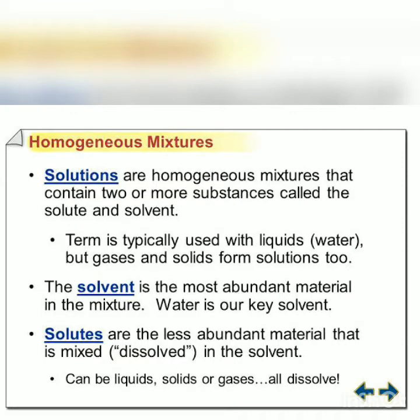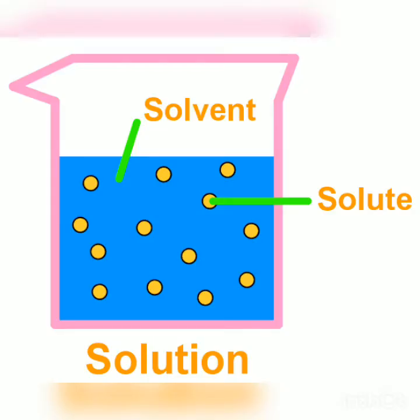A solution is considered as a homogeneous mixture. But first of all, the very first question that arises in our mind is: why is a solution considered as a mixture? Because it can be separated into its components by any physical method. In fact, it shows the property of its constituents and it has a variable composition. This means we can add substances in any amount to make a solution.